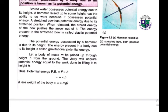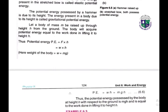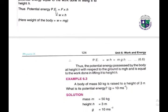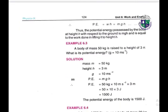Let a body of mass m be raised to a height h from the ground. The body acquires potential energy equal to the work done in lifting it to height h. PE = Force × height = Weight × height = mg × h. Thus the gravitational potential energy is PE = mgh, equal to the work done in lifting it to height h. This is Equation 6.6 — you must remember it for numerical problems.